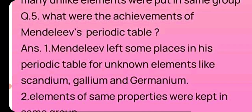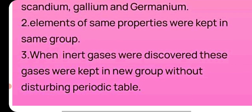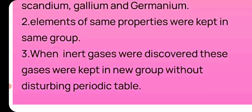Question number 5: What were the achievements of Mendeleev's periodic table? Mendeleev left some spaces in his periodic table for unknown elements like scandium, gallium, and germanium — meaning places were reserved for elements not yet discovered. Elements with similar properties were kept in the same group. When inert gases, that is noble gases, were discovered, they were placed in a new group without disturbing the existing periodic table.